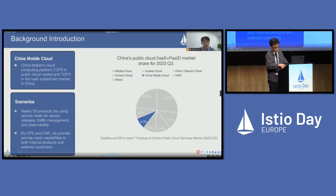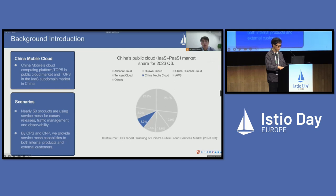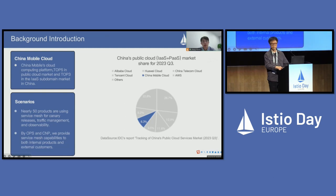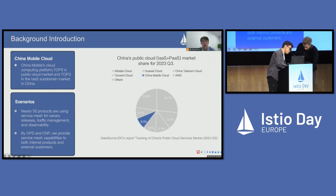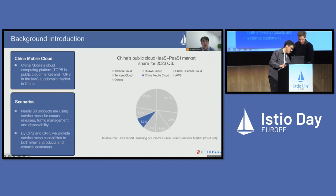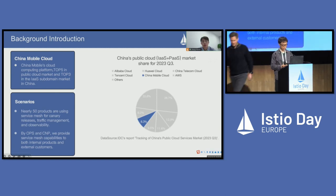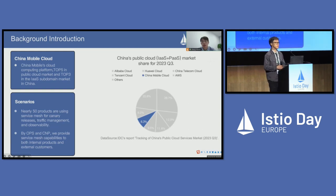First, let's start with some background information. We are from China Mobile, mainly focusing on China Mobile Cloud. It is a cloud computing platform of China Mobile, similar to AWS. It is currently the fastest growing cloud computing platform in China, ranking in the top five in the public cloud market and top three in the IDC domain market. Istio is widely used in China Mobile Cloud, with 50 products using Istio for canary releases, traffic management, and observability.